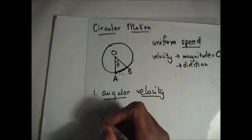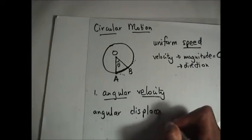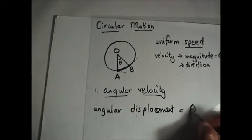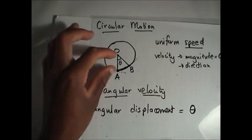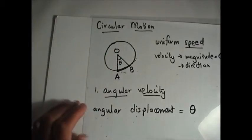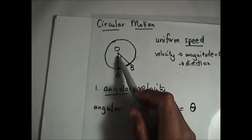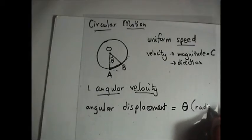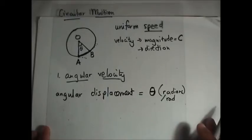Let's define angular displacement. Angular displacement is equal to theta — the angle that the radius sweeps through in that time. This angle is called angular displacement and it is measured in radians, abbreviated as rad.